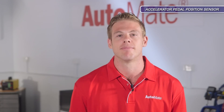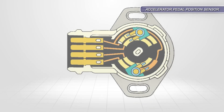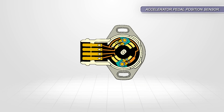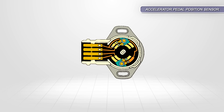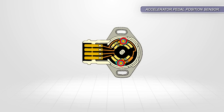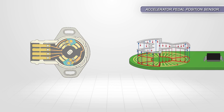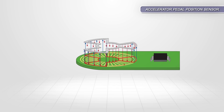The job of the accelerator pedal position sensor, or APP, is to convey the driver's torque request to the ECM. There are different types of APP in use in current motor vehicles: a variable resistor with two position sensors for redundancy, or a contactless position sensor.